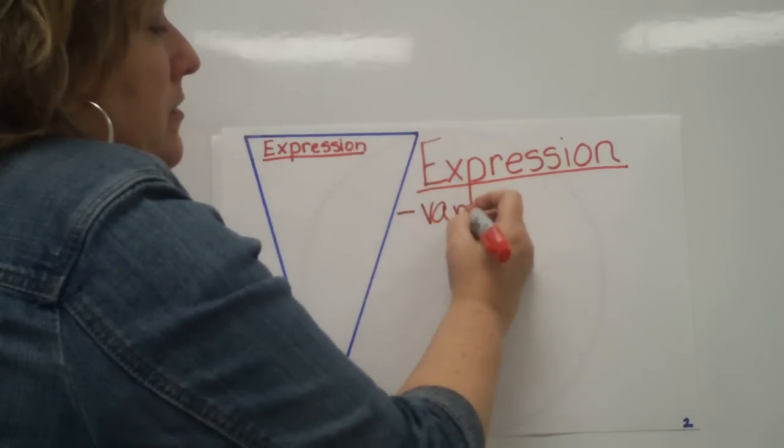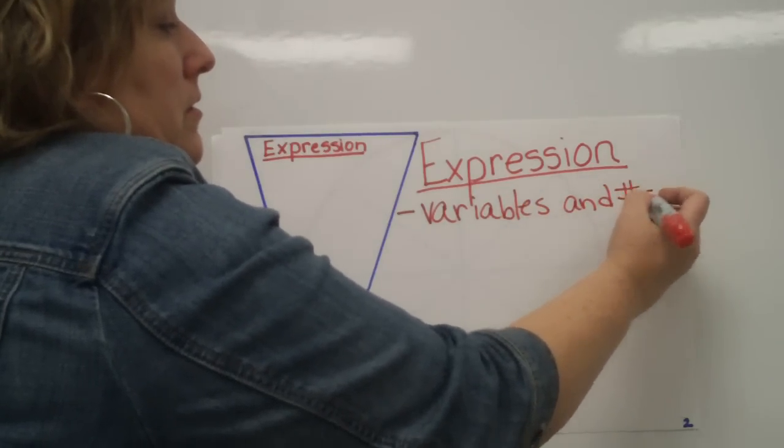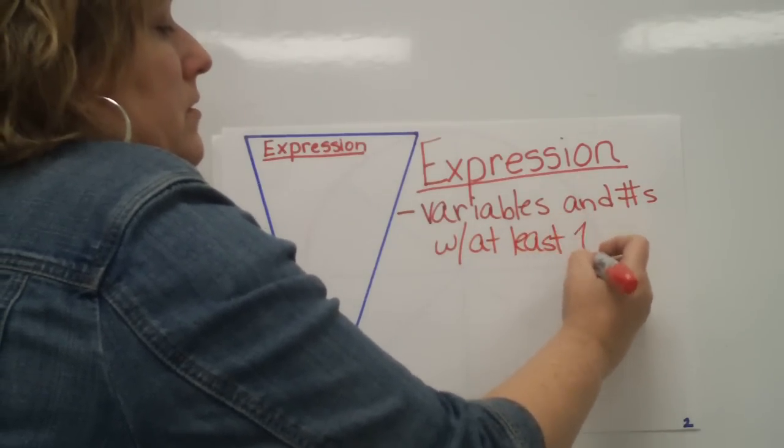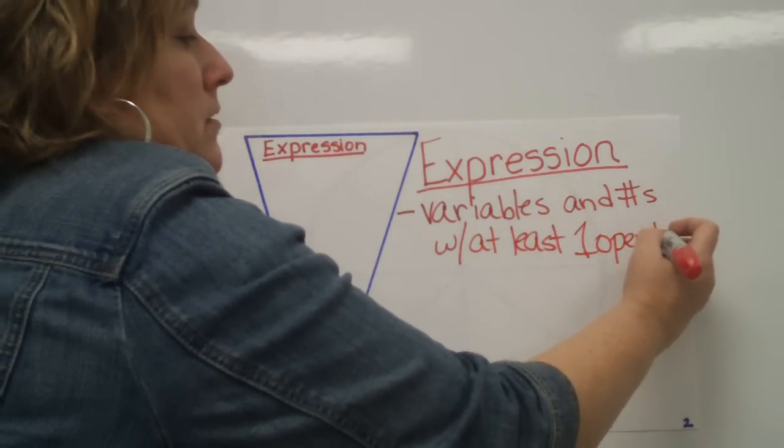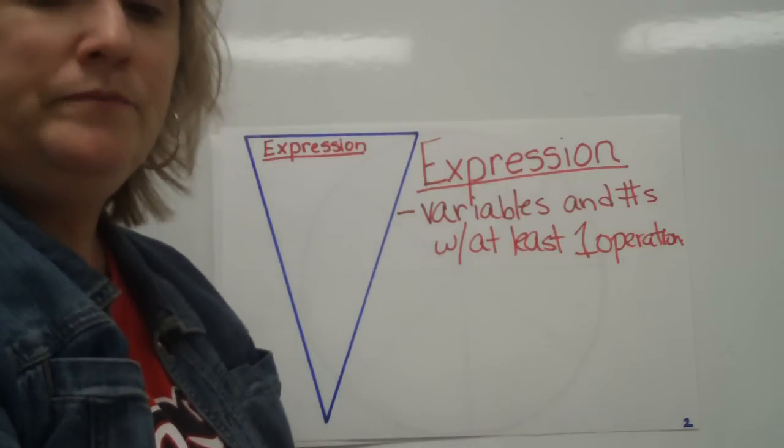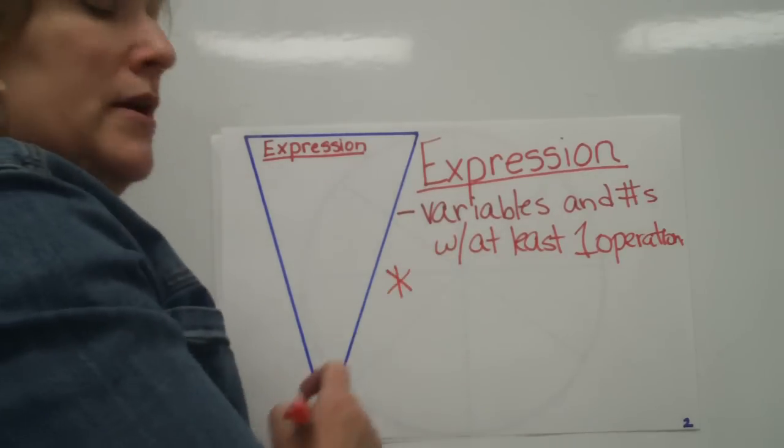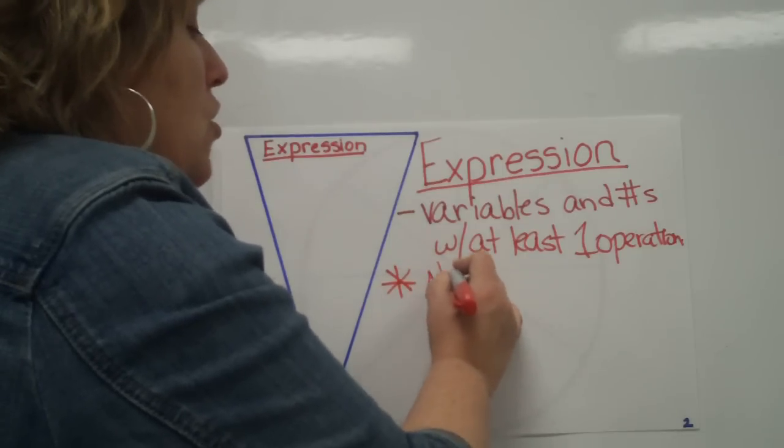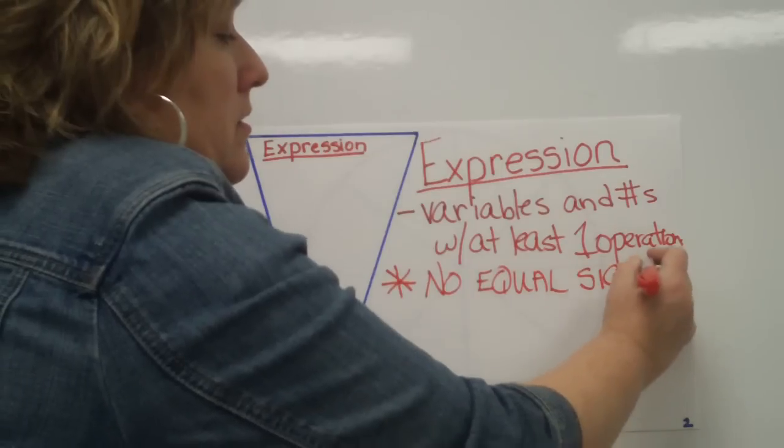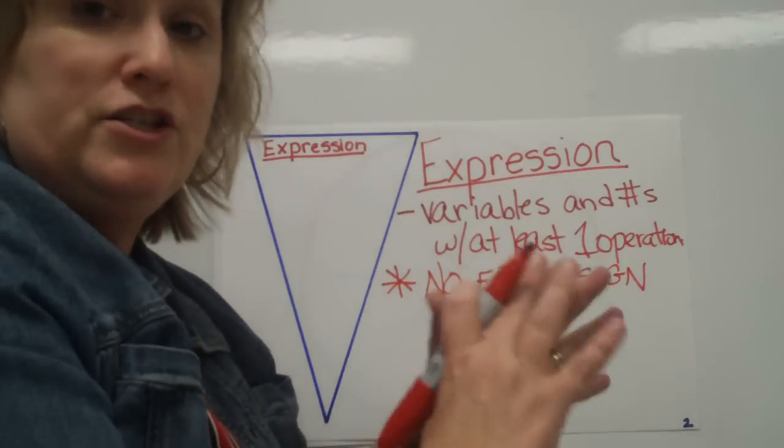So an expression is just variables and numbers with at least one operation. You know what the operations are - that's your add, subtract, multiply, divide. The biggest thing about an expression to remember, and this is a key point, is that it has no equal sign. There is no equal sign in an expression. It's just numbers and variables and operations all together, but there is no equal sign.